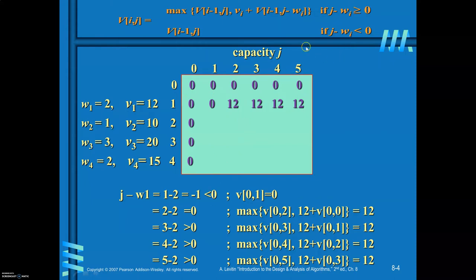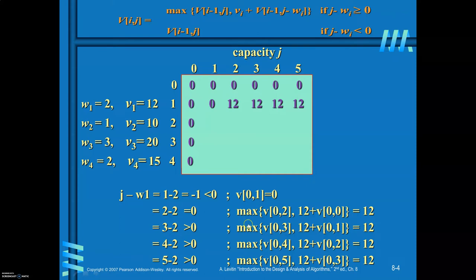When capacity j is 2, j minus w_i equals 2 minus 2 equals 0, so you consider the maximum of v[0][2] and 12 plus v[0][0], which equals 12. Similarly, v[1][3] is the maximum of v[0][3] and 12 plus v[0][1], which is 12. v[1][4] is the maximum of v[0][4] and 12 plus v[0][2], which is 12. v[1][5] is the maximum of v[0][5] and 12 plus v[0][3], which is also 12.